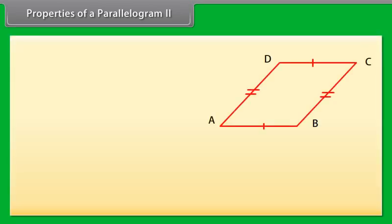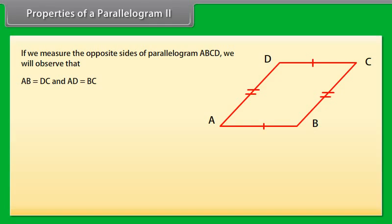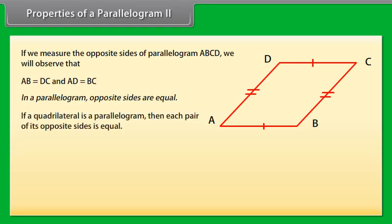Properties of a parallelogram - Property 2: Since the diagonal divides the parallelogram into two congruent triangles, if we measure the opposite sides of parallelogram ABCD, we observe that AB equals DC and AD equals BC. This is the property: in a parallelogram, opposite sides are equal. This theorem can also be stated as: if a quadrilateral is a parallelogram, then each pair of its opposite sides is equal.